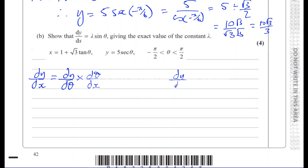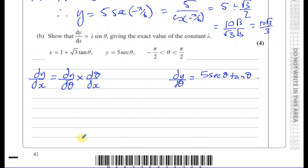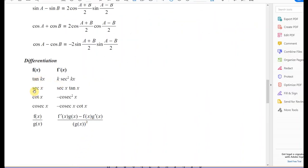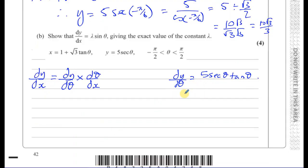dy/d theta: the differential of sec theta is sec theta tan theta — this is in your formula book and can also be derived since sec theta equals 1 over cosine theta. For dx/d theta: the 1 disappears, and the differential of tan theta is sec squared theta, so dx/d theta equals root 3 sec squared theta.